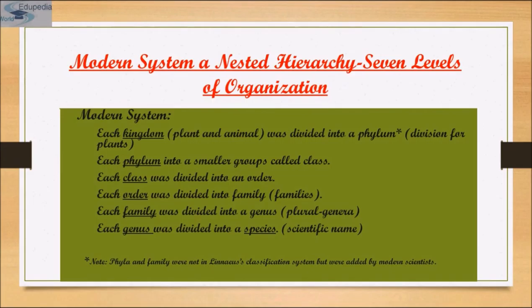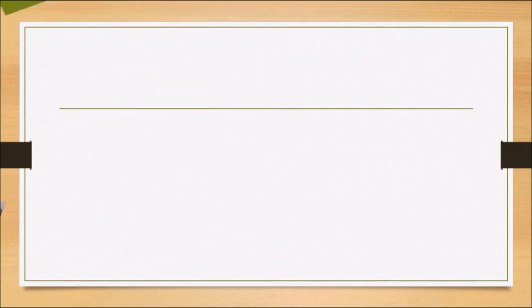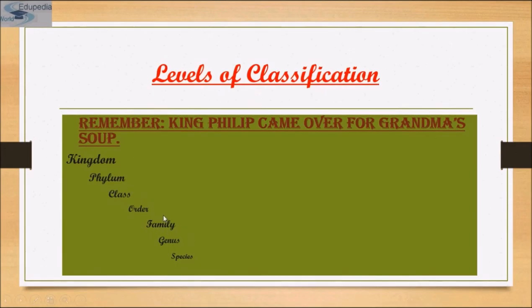Each kingdom was divided into phyla. Phylum means division for plants. Each phylum was divided into smaller groups called classes. Each class was divided into an order, each order into a family, each family into a genus, and each genus into species. Note that phylum and family were not in Linnaeus's original classification system — they were added by modern scientists.